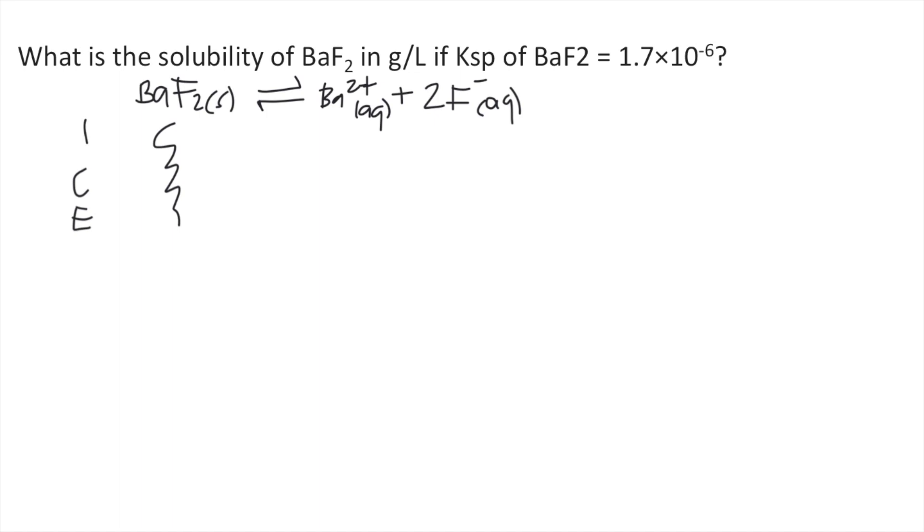For change or C, for the product side, we put plus S, which stands for solubility. That's for Ba²⁺. And for F⁻, we put plus 2S, because there are 2F⁻, the coefficient is 2. And for E, we just add I and C. So that's S and 2S.